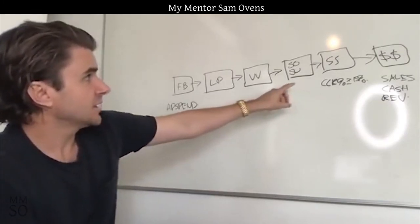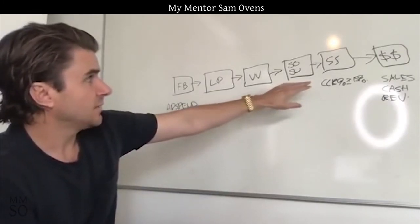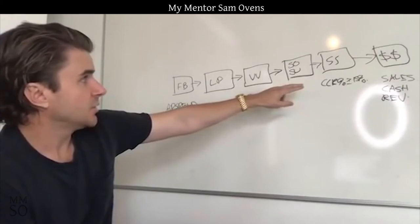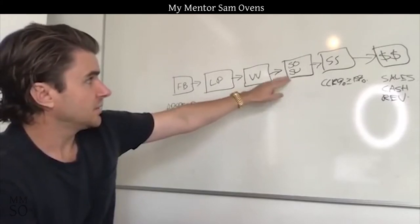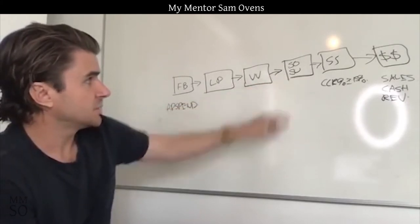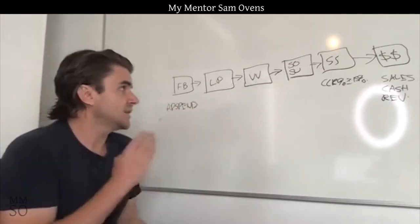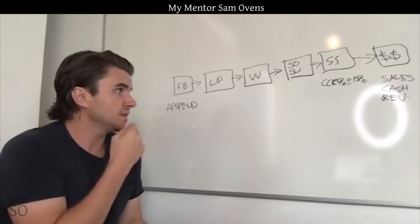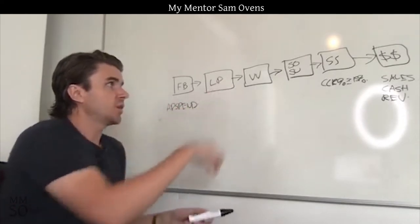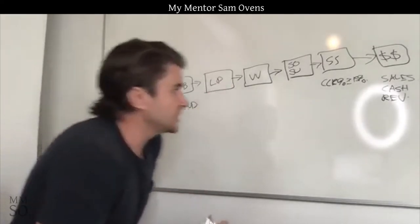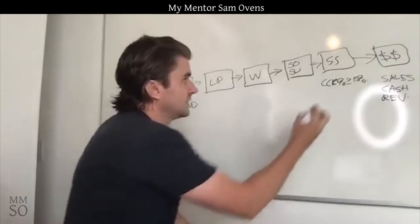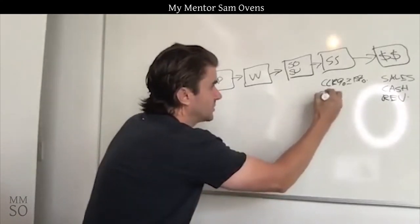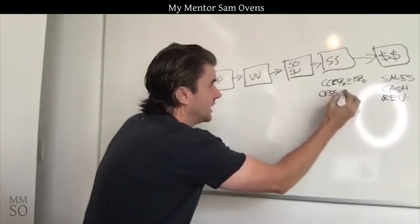So when people tell you that a 15% converting landing page is stupid, then they're stupid. The next thing to look at past there would be this next piece, which is Schedule Once and the survey. Another thing that's important is: what is the cost per strategy session? How much does it cost you to generate a call?